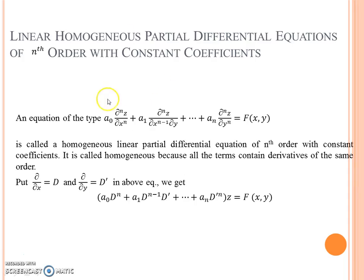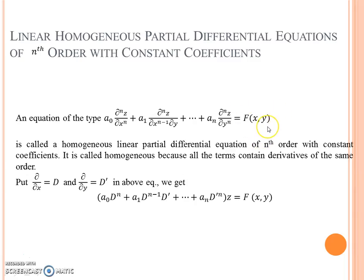This is the general form of linear partial differential equations, and the complete solution of this equation is z equal to CF plus PI. If f(x, y) on the right-hand side is zero, then PI is zero. If f(x, y) is non-zero, then we have to find the PI.